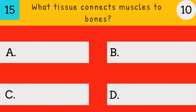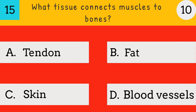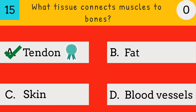What tissue connects muscles to bones? Tendon, fat, skin, or blood vessels? The answer is tendon — tendon connects muscles to bones.